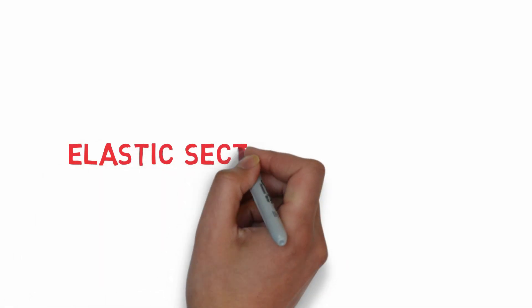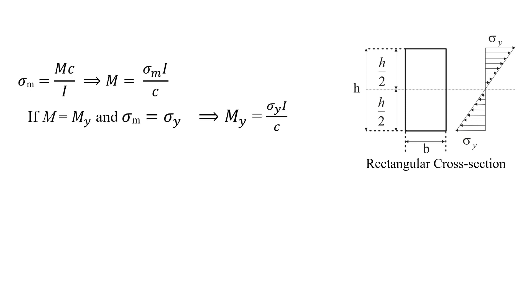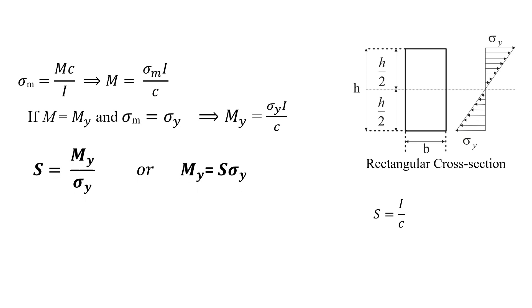One of the important section properties is the elastic section modulus, denoted S. For an elastic rectangular cross-section, from the flexural formula we can calculate the yield moment as: My equals sigma_y times I over c. Since I and c are cross-sectional properties, we can define the elastic section modulus as S equals I over c, therefore S equals My over sigma_y. In other words, the elastic section modulus relates the yield stress to the yield moment. For a rectangular cross-section, the elastic section modulus is S equals base times height squared over 6.